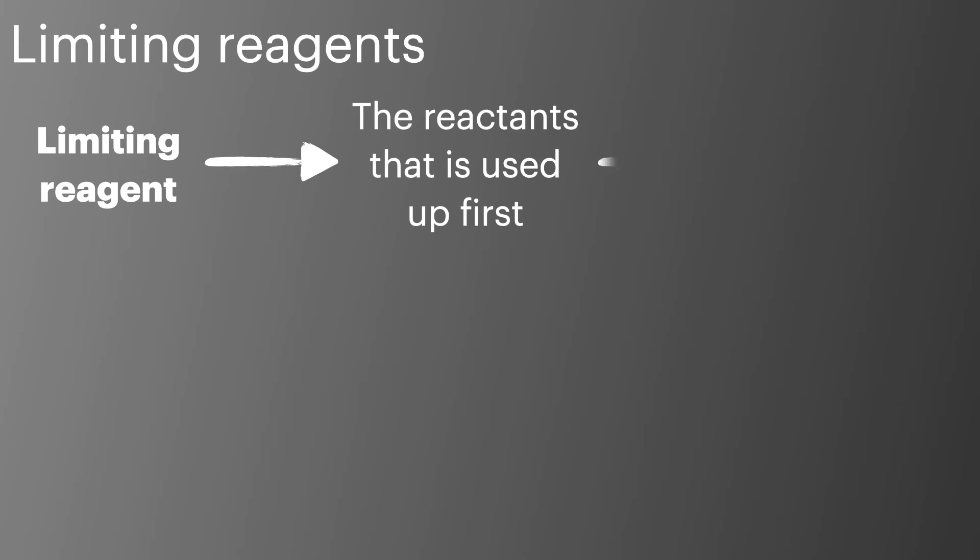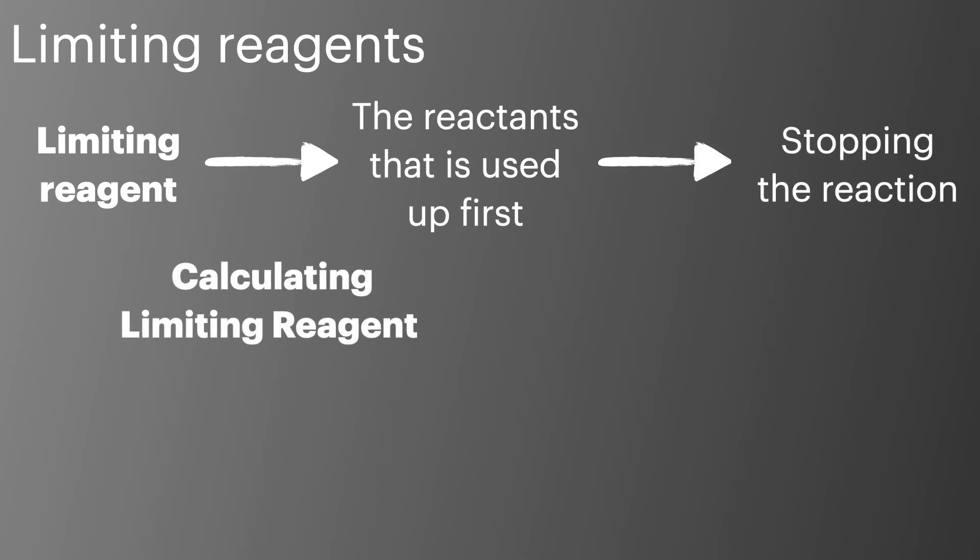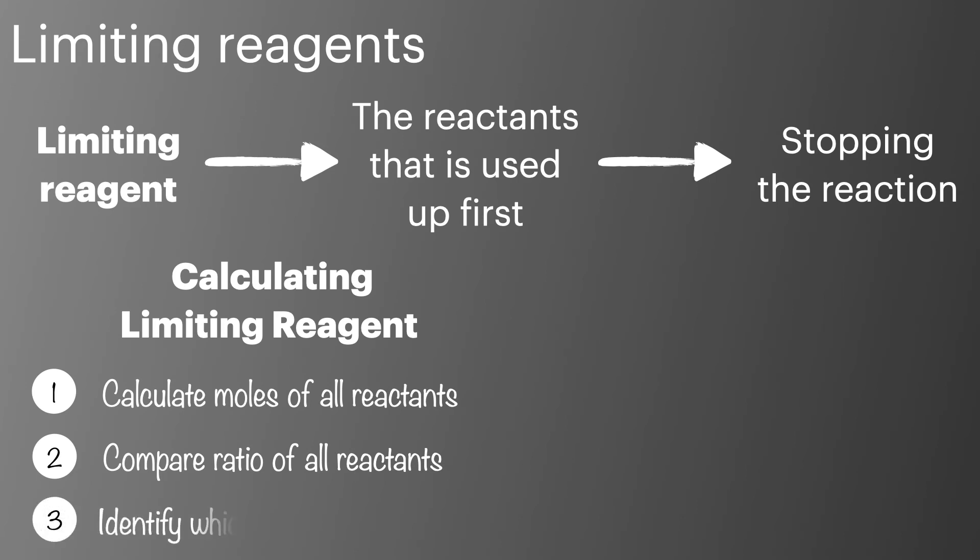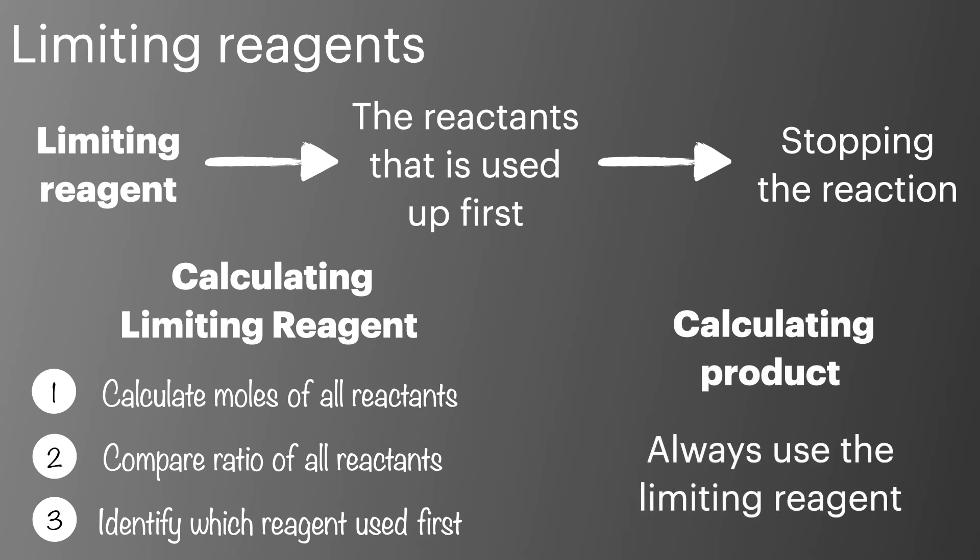A chemical reaction finishes when one of the reagents is used up. A limiting reagent is the reactant which is used up first. This causes the chemical reaction to stop. To calculate the limiting reagent, we're first going to calculate the number of moles of each of the reactants. We're then going to compare these using the reaction stoichiometry, and then we're going to identify the reagent which is used up first. When it comes to calculating the moles of a product formed, we always go off the limiting reagent.